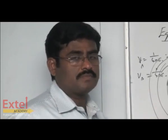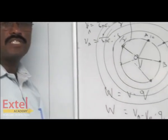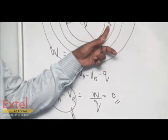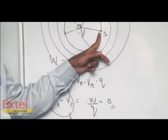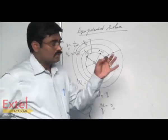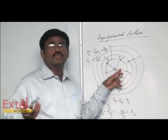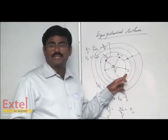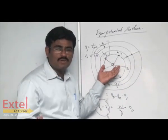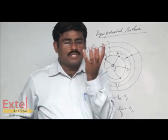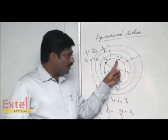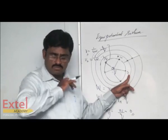The work done in moving any amount of charge from one point to another point on the equipotential surface is always equal to zero. A question may be asked: work done in moving 1000 coulombs of charge from one point to another point on the equipotential surface is equal to zero. Whether it is 1000 coulombs or 1 coulomb, whatever be the quantity of charge moved on the equipotential surface, the work done is always zero.